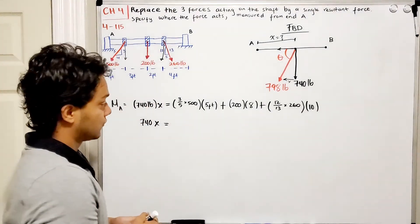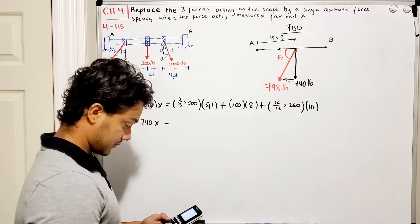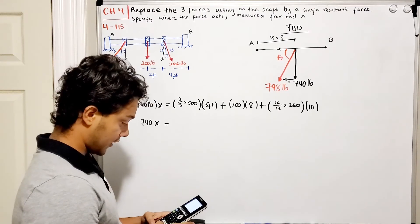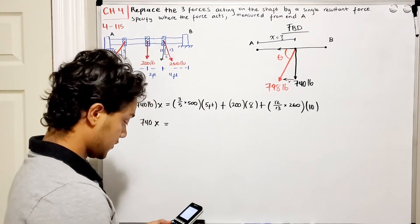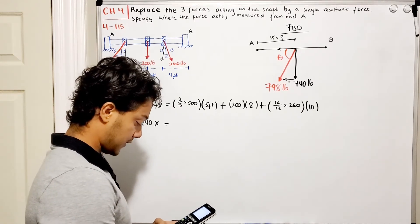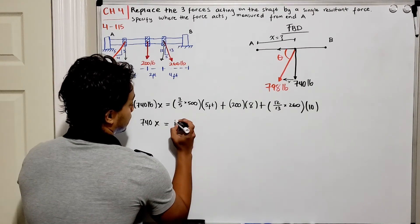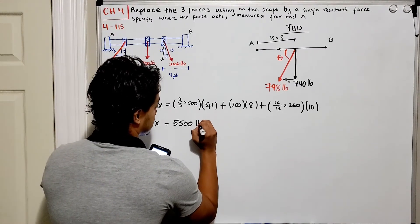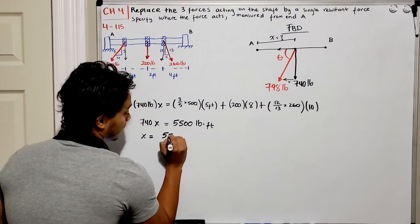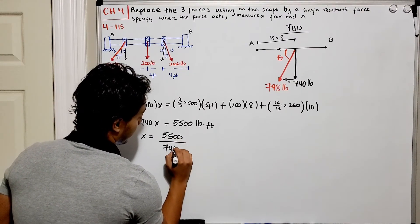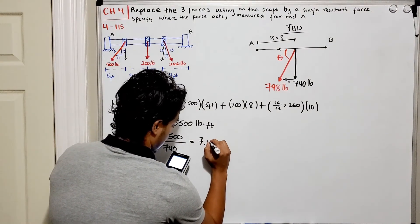Calculating the total moment: (3/5)(500)(5) + 200(8) + (12/13)(260)(10) equals 5500 pound-feet. Solving for x: 5500 divided by 740 gives x equals 7.43 feet from point A.